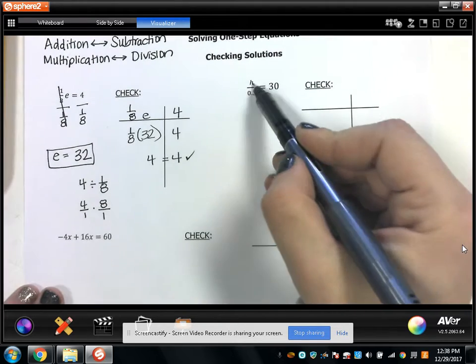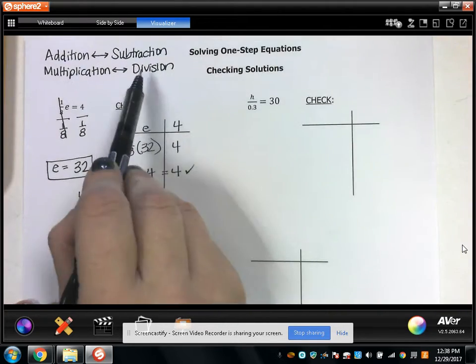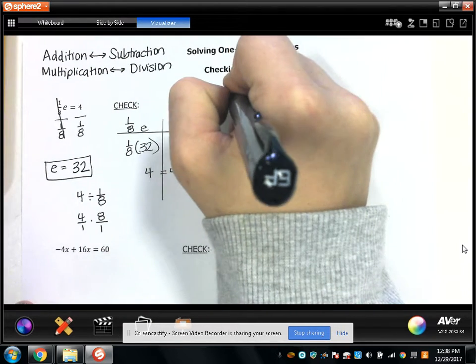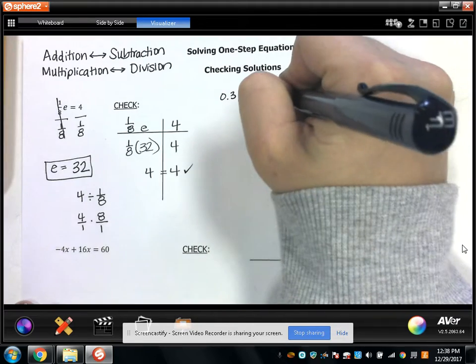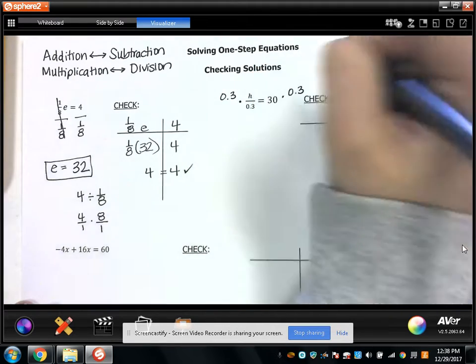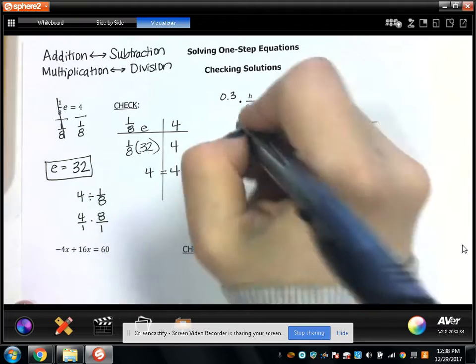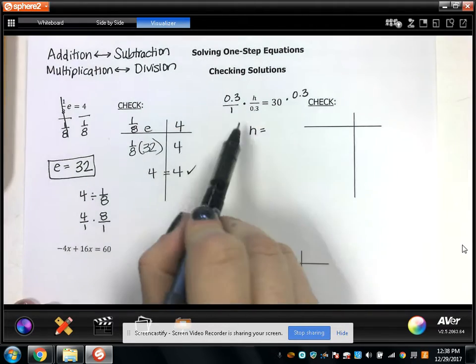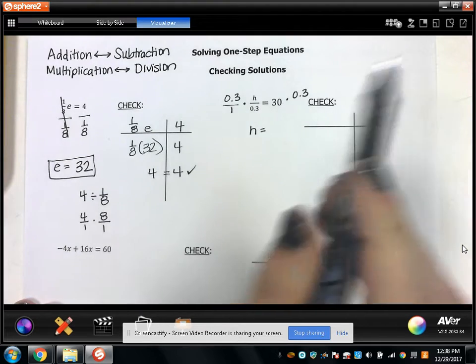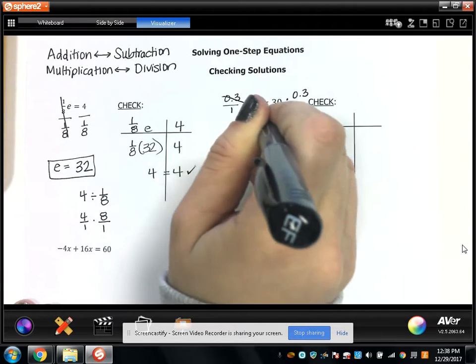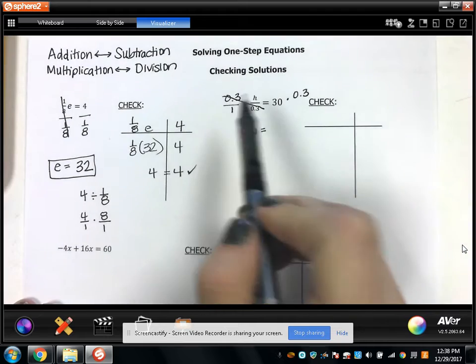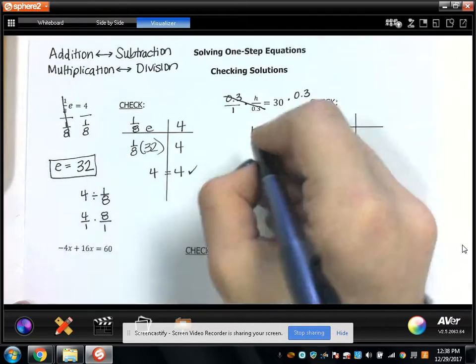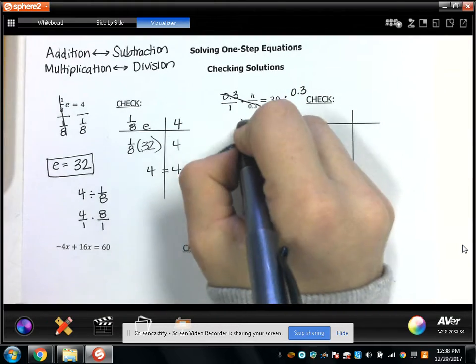Here, H is being divided by 0.3. What's the opposite of dividing by 0.3? Multiplying by 0.3. So I'm going to multiply this side of the equation by 0.3, and I'm going to multiply this side of the equation by 0.3. And I get H equals, let's see, over here the 0.3 and the 0.3 equal 1, so I'm left with H divided by 1 or just H. And over here, this is 30 times 0.3, which my calculator says is 9. So I get H equals 9.